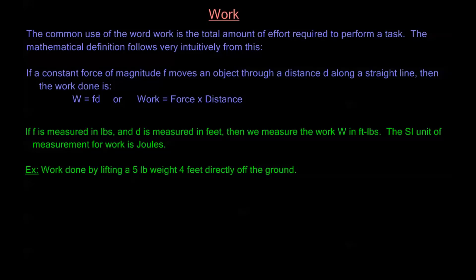For example, let's say we wanted to calculate the work done by lifting a five-pound weight four feet directly off the ground. From our formula, F is five pounds — that's the force required to lift it — and D is four feet, the distance the weight has been moved. So the work is simply five pounds times four feet, giving us 20 foot-pounds.